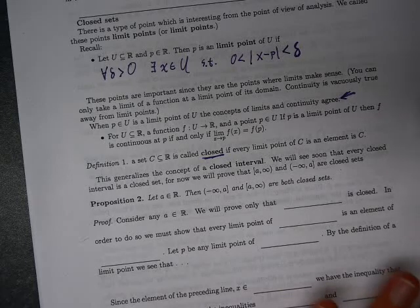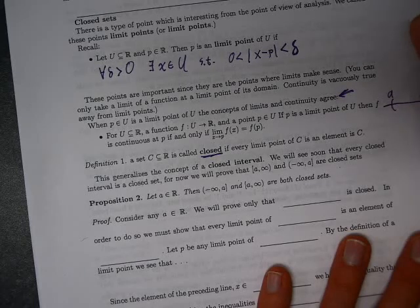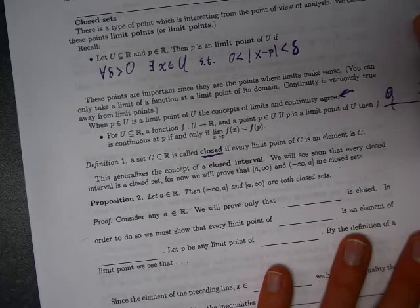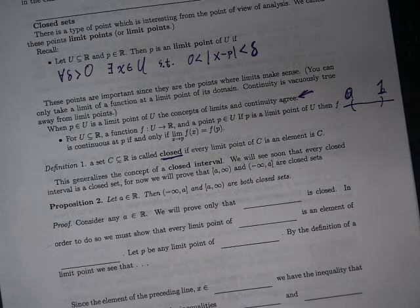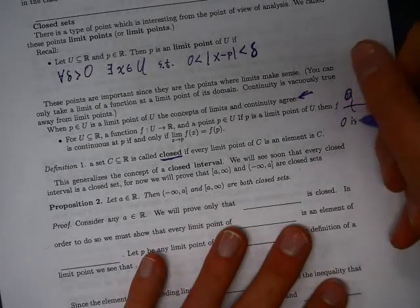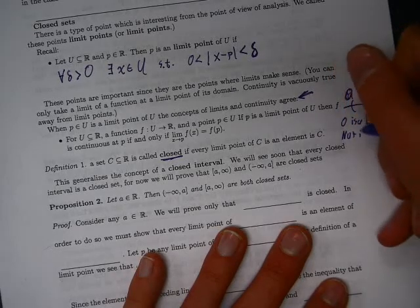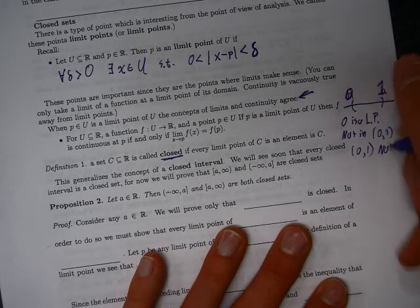Let's think about examples. The open interval (0,1): is that a closed set? No. Is 0 a limit point of that set? Yes. Is 0 in that set? No. So there exists a limit point of the set that's not in the set. Thus (0,1) is not closed.